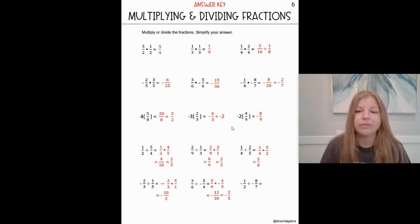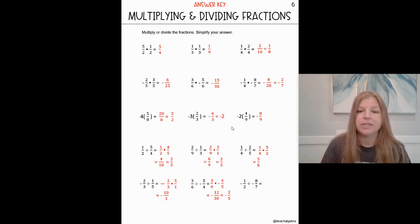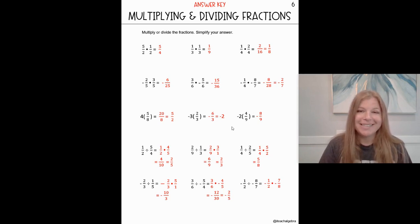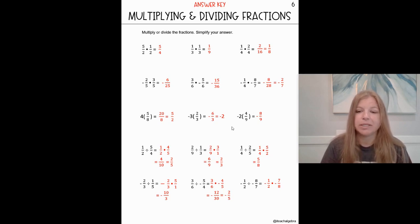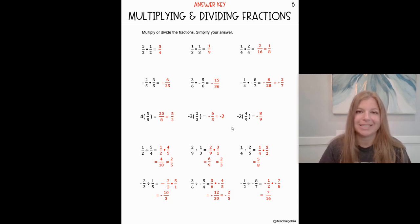And the last one: negative one half divided by negative eight sevenths. A negative divided by a negative is a positive. This would end up being negative one half times negative seven eighths. A negative times a negative is also a positive, so I could have gotten rid of those negatives right away. I multiply straight across, and my end result is seven sixteenths.